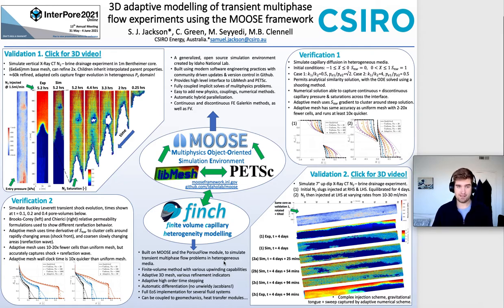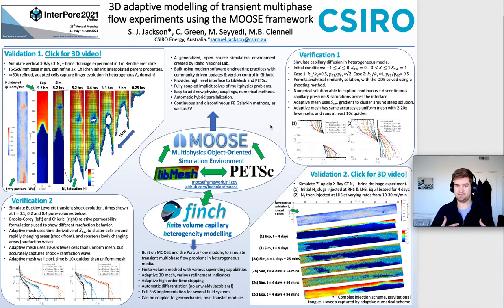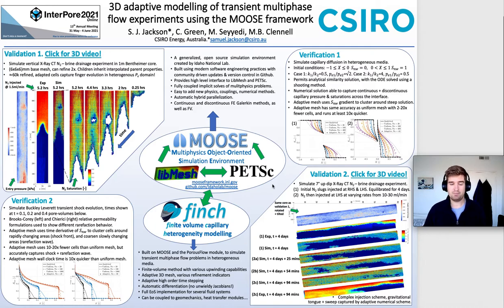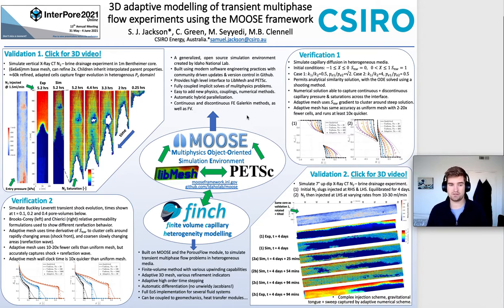MOOSE is developed primarily by researchers at Idaho National Lab. It's a very general simulation environment built using modern software engineering practices with community-driven updates and version control in GitHub. It has a high-level interface to LibMesh and PETSc, so it can be parallelized and has various meshing options that can be adaptive to your flow, and various discretization methods such as finite element — both Galerkin discontinuous and continuous — as well as finite volume.